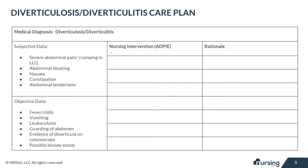Now let's look at our objective data. Your patient might be experiencing fever and chills if they have an infection, or even leukocytosis. If the patient is severely constipated, they might experience some vomiting. You might notice that your patient is guarding their abdomen because of pain from the constipation, inflammation, and possibly infection. The diverticula might bleed, showing up in the stools as a bright red or even maroon color. You might even notice evidence of the diverticula in a colonoscopy.